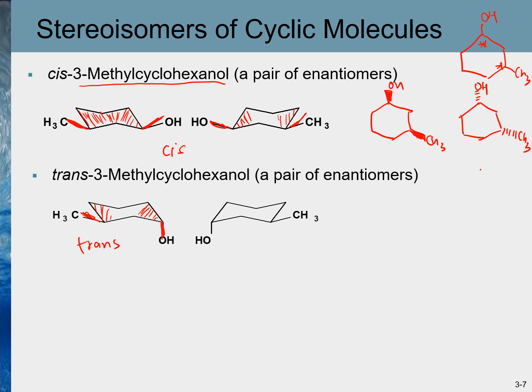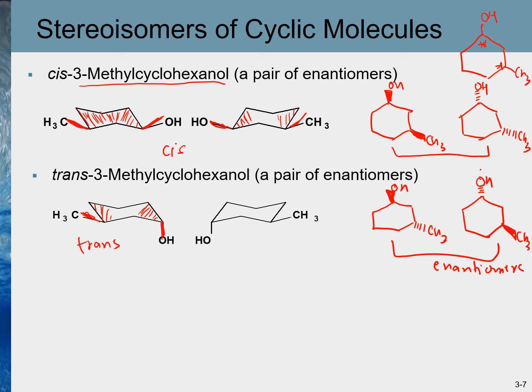It is easier to visualize enantiomers and stereoisomers if we draw cyclohexane as a planar ring. In the planar ring structure, the molecule and its stereoisomer are drawn, and these two are enantiomers. The other two structures are also enantiomers of each other. Together there are four stereoisomers, and the cis pair and trans pair are diastereomers of each other.